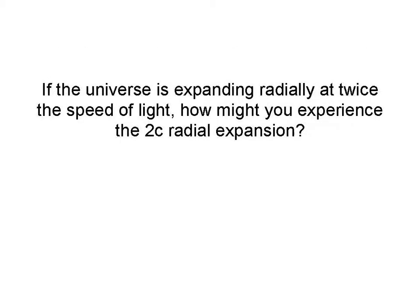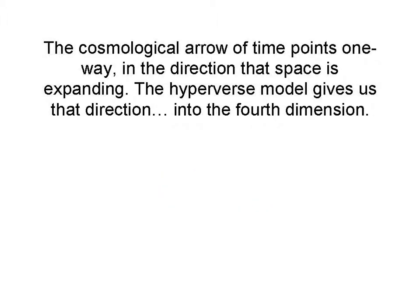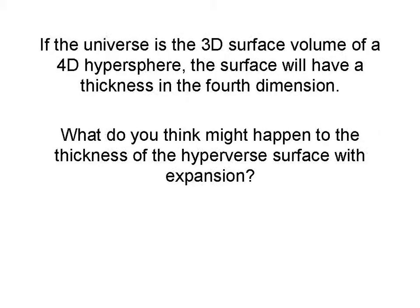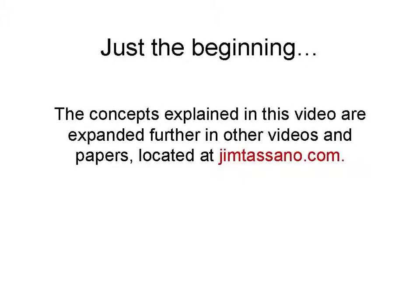Now, if the universe is expanding radially at twice the speed of light, you might be wondering: how do you experience this 2c radial expansion? I would suggest that this is the basis of time. The cosmological arrow of time points one way — in the direction that space is expanding. The hyperverse model gives us that direction: it's into the fourth dimension. And the 2c radial expansion immediately suggests a reason that nothing in the universe can move faster than the speed of light — that the speed of light is limited to one half of the radial expansion rate. If the universe is the 3D surface volume of a 4D hypersphere, the surface volume, our universe, will have a thickness in the fourth dimension. And with expansion, what do you think might happen to the thickness of the universe? And this is just the beginning.